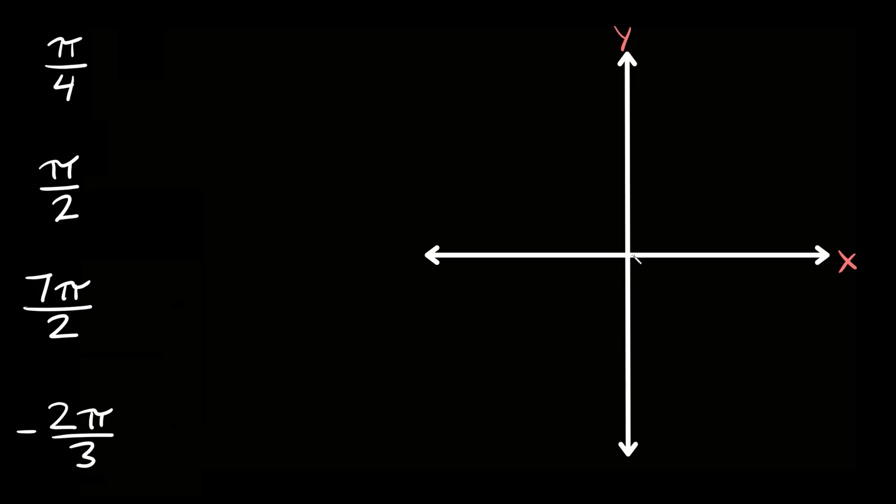When you draw an angle, whether it's in degrees or radians, you always start right here along the x-axis, this horizontal side. This is our initial side. Then we need to draw the angle, so in this case it's π/4. And wherever that ends, let's just say it's over here, this would be our terminal side.